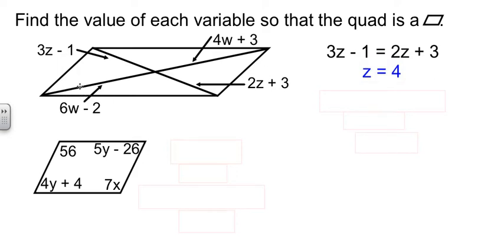Similarly, 6w minus 2 has to equal 4w plus 3. Because they have to bisect each other, do a little algebra, and then divide. And we find out that w is 2 and a half.